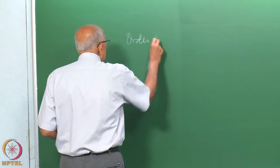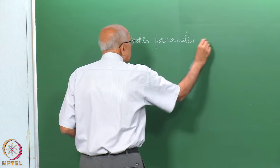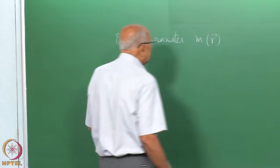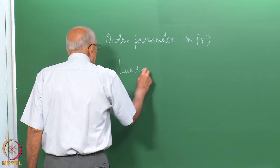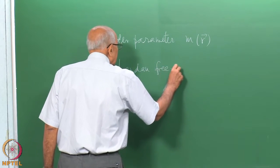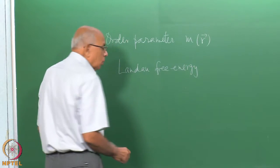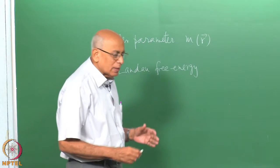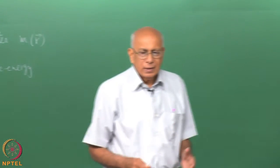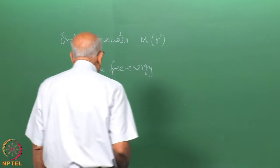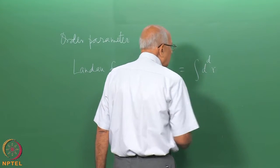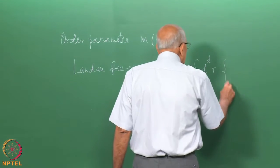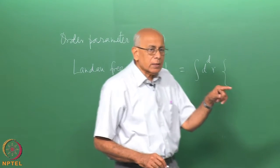To recall, we begin with the order parameter M of R — the magnetization or whatever the order parameter may be. If you recall the Landau free energy, it is not exactly the Helmholtz or Gibbs free energy; we constructed a functional such that you got the correct equilibrium value above and below the critical temperature. This free energy L is equal to an integral in d dimensions of R, and first of all in the absence of an external field there is no linear term.